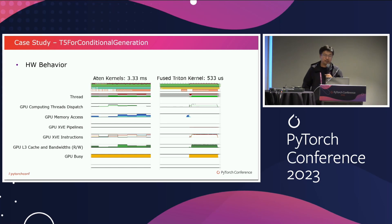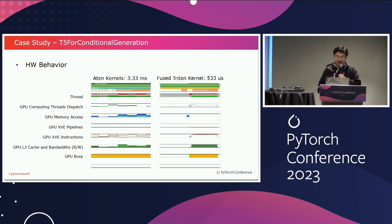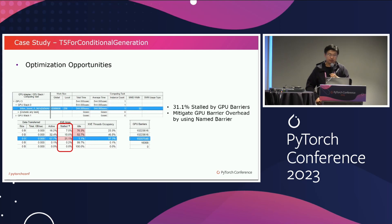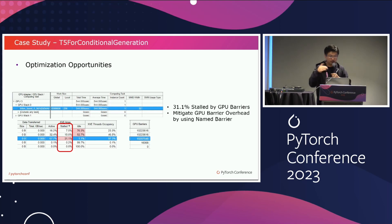In terms of hardware behavior, the Triton kernel performs better than the oneDNN operation path. The memory access of the Triton kernel is concentrated at the beginning of the kernel, whereas for oneDNN, the global memory access lasts to the end of the kernel. The L3 memory bandwidth utilization of the Triton kernel is much better than oneDNN. Besides the performance improvement, there are still potential optimization opportunities — about 31% stall caused by GPU barriers. For the Intel GPU backend, we will mitigate this overhead by using named barriers, orchestrating barrier arrive, wait, and other no-data-dependency instructions to reduce the stall overhead.